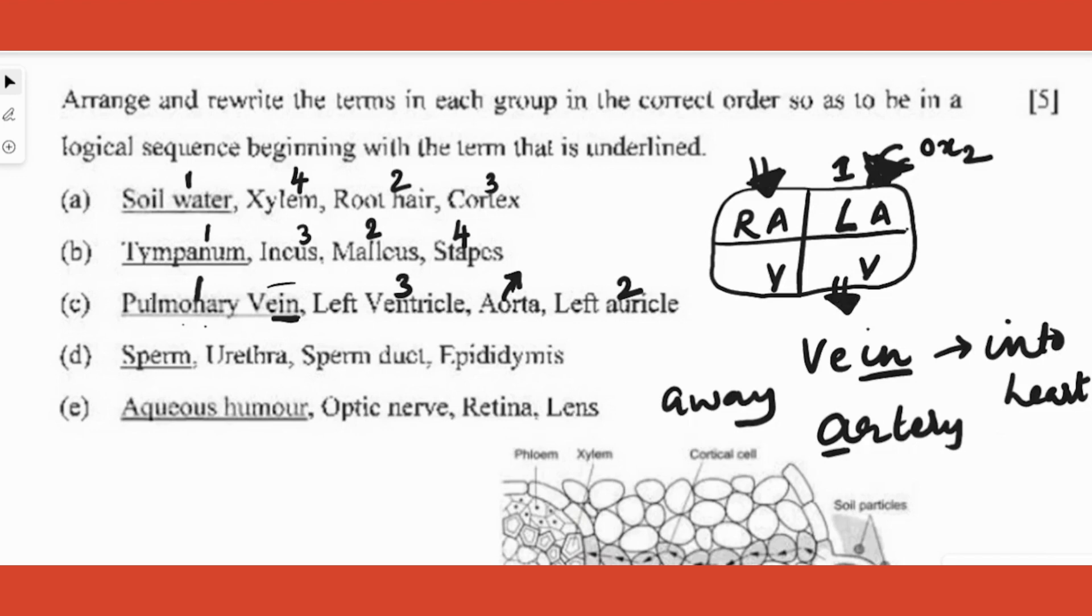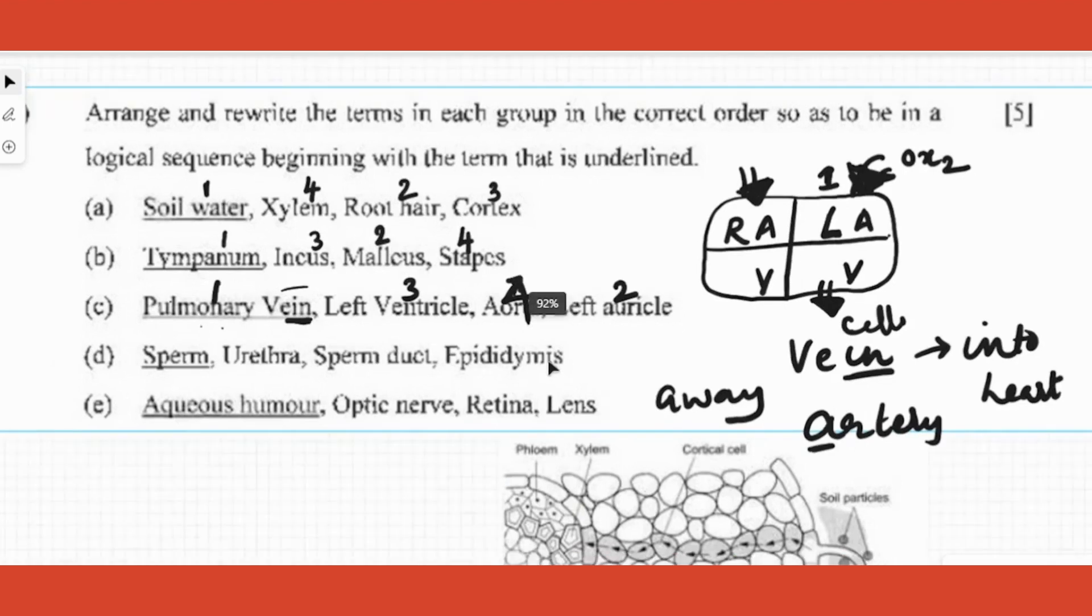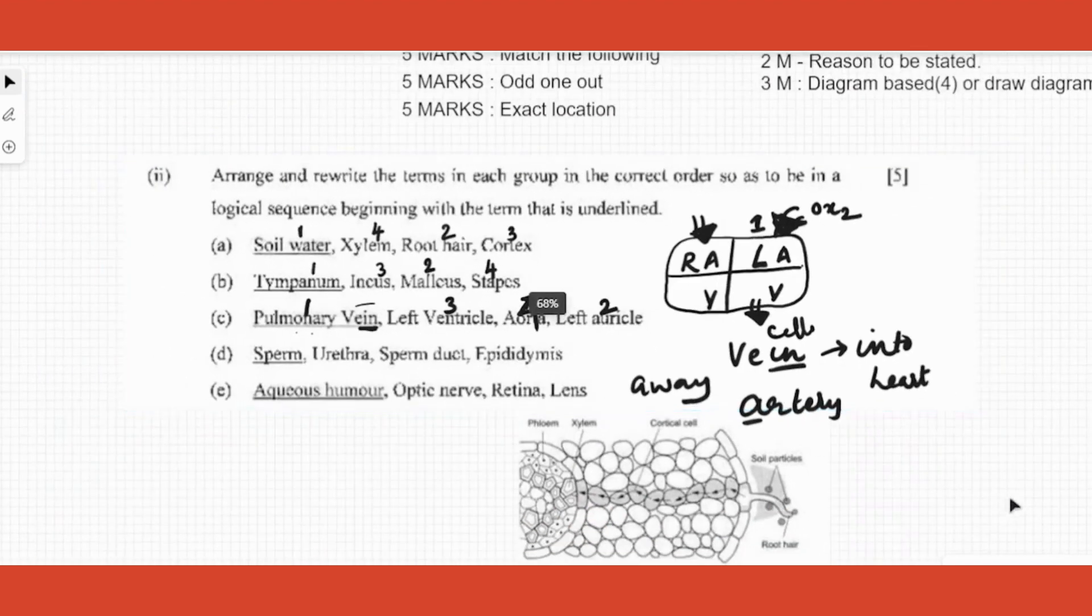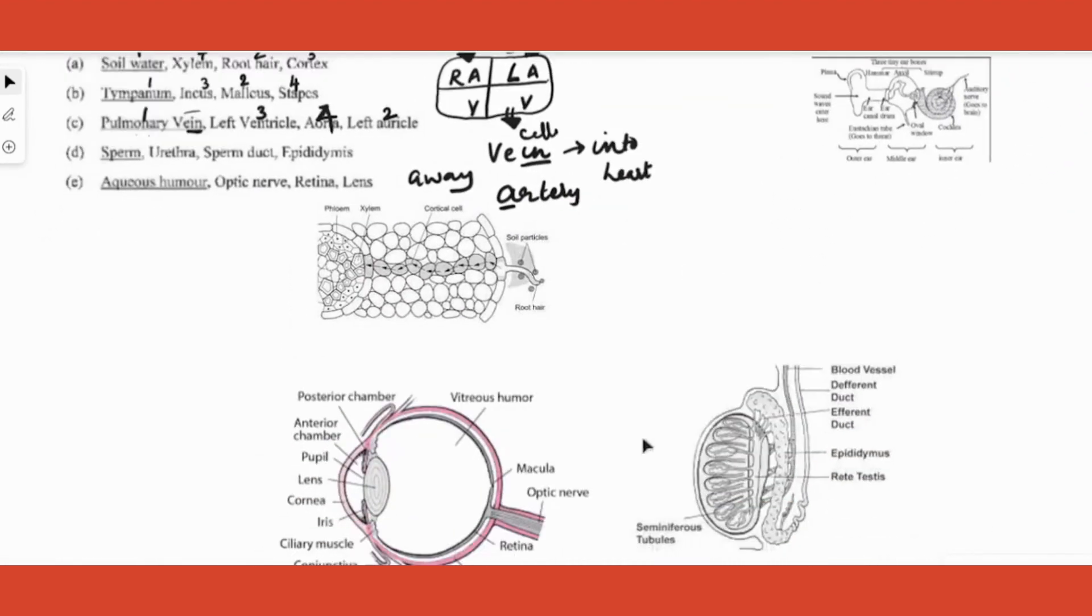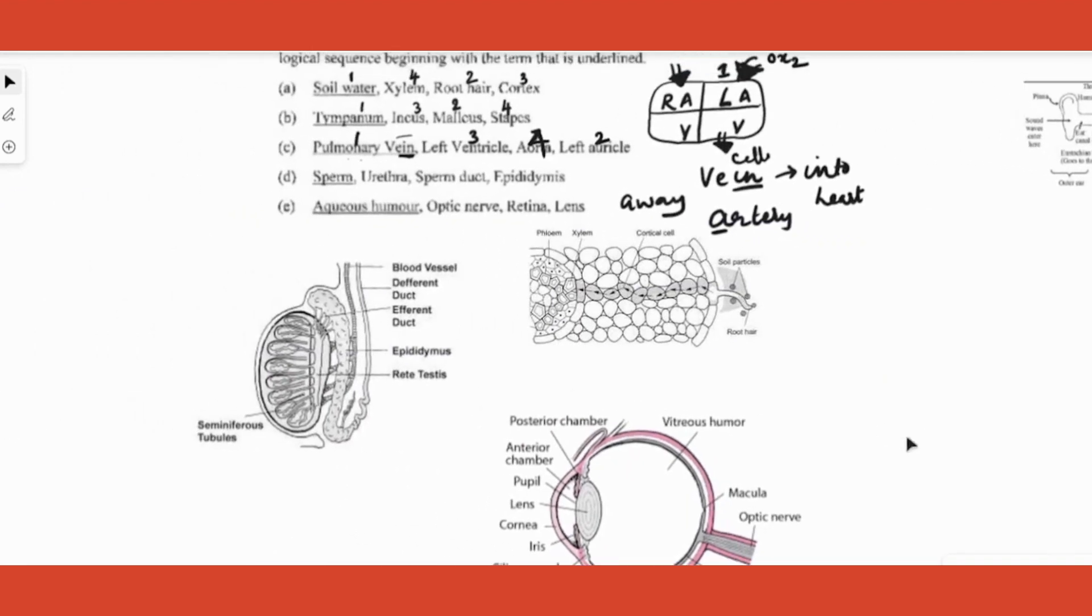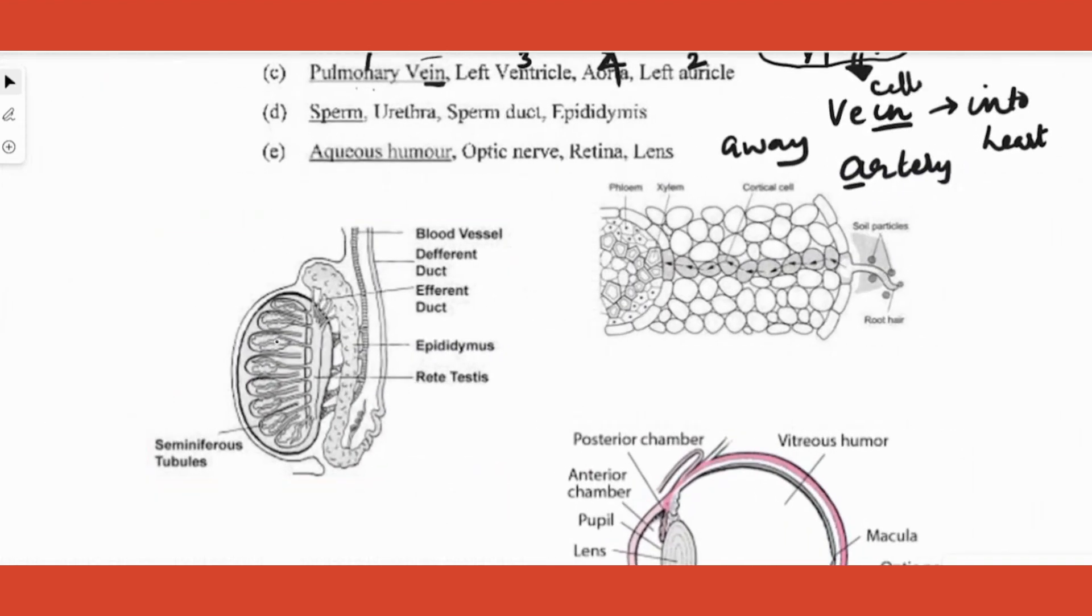Next question: sperm, urethra, sperm duct, and epididymis. Very easy if you know the concept. Sperm is produced where? Let's have a look at the picture. Your testis is here, where is sperm produced? Over here. From there, where does it go? It goes to the cap - what is the name of the cap? Epididymis. So one, two, then it goes into the vas deferens, also called the sperm duct, then it goes and joins onto the urethra here.